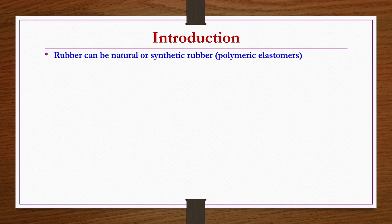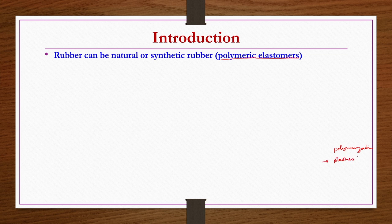First we have an introduction about rubber industry. Rubber can be natural or synthetic. Synthetic rubbers are counted under the polymeric elastomers category. If you remember in the previous chapter on polymerization, we discussed addition and condensation, polycondensation methods to produce various polymers. The second category was rubbers, under which most elastomer or elastomeric polymerization processes come into the picture.